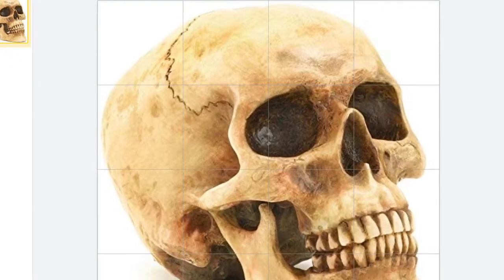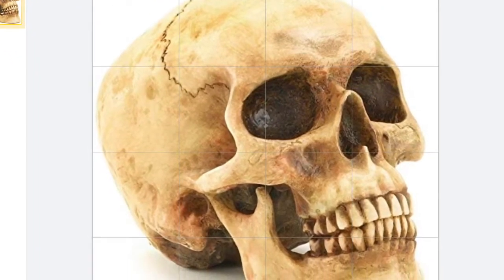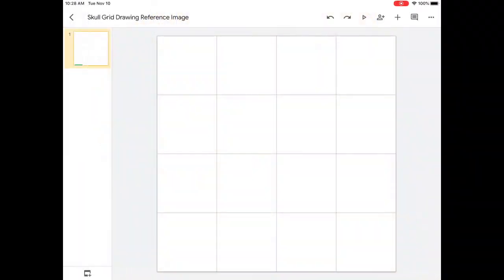Step one is to choose an image and put it behind the grid on Google Classroom. Here's how to do it. You want your grid to go on top of your image. So you'll notice that the grid is a 4x4 grid.